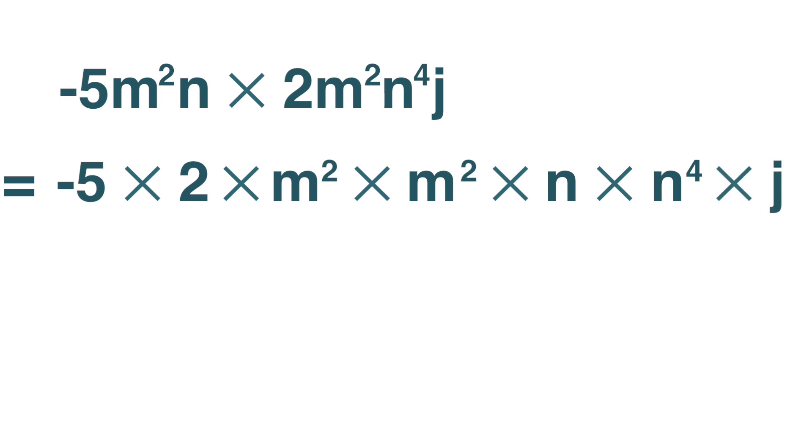Negative 5 times 2 is negative 10. m squared times m squared is m to the power of 4. n times n to the power of 4 is n to the power of 5. j remains unchanged.